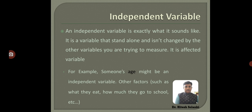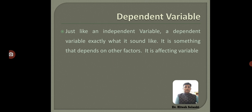First of all we are going to discuss about the independent variable. An independent variable is exactly what it sounds like — it is a variable that stands alone and isn't changed by the other variables you are trying to measure. For example, someone's age might be an independent variable. Other factors such as what they eat or how much they go to school are not affecting age. So age is an independent variable.